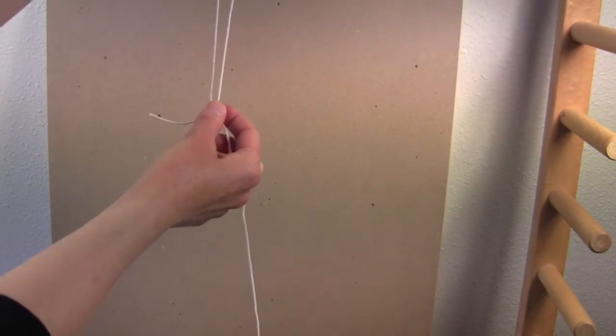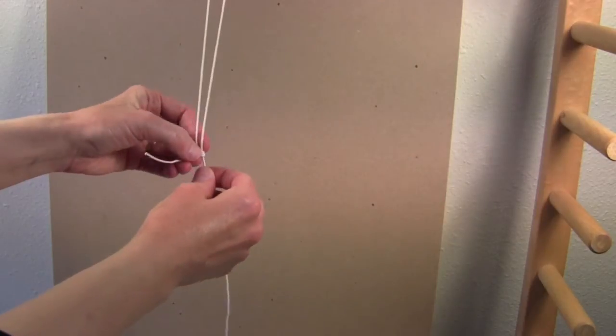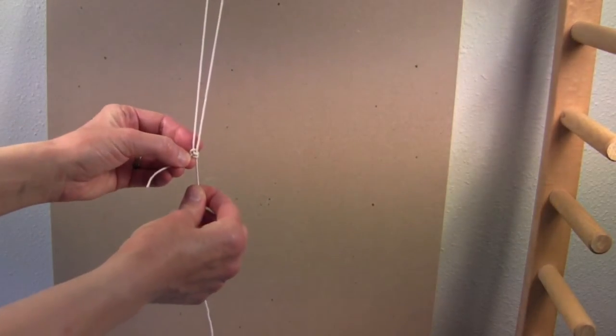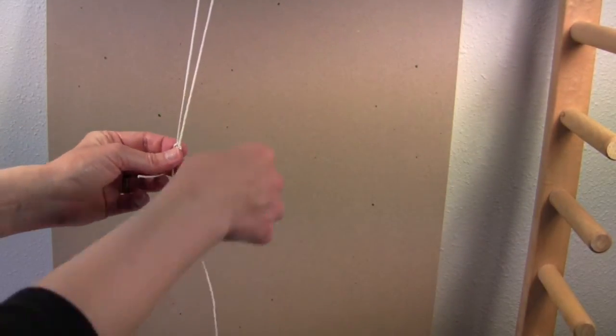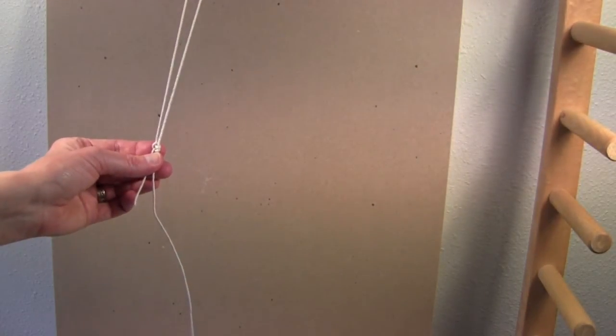If this were your Murex warping bar, you would just slide this down, and that would tighten that whole thing up. This knot will hold. You don't have to do anything else to it if you're using it at the end of a Murex warp.